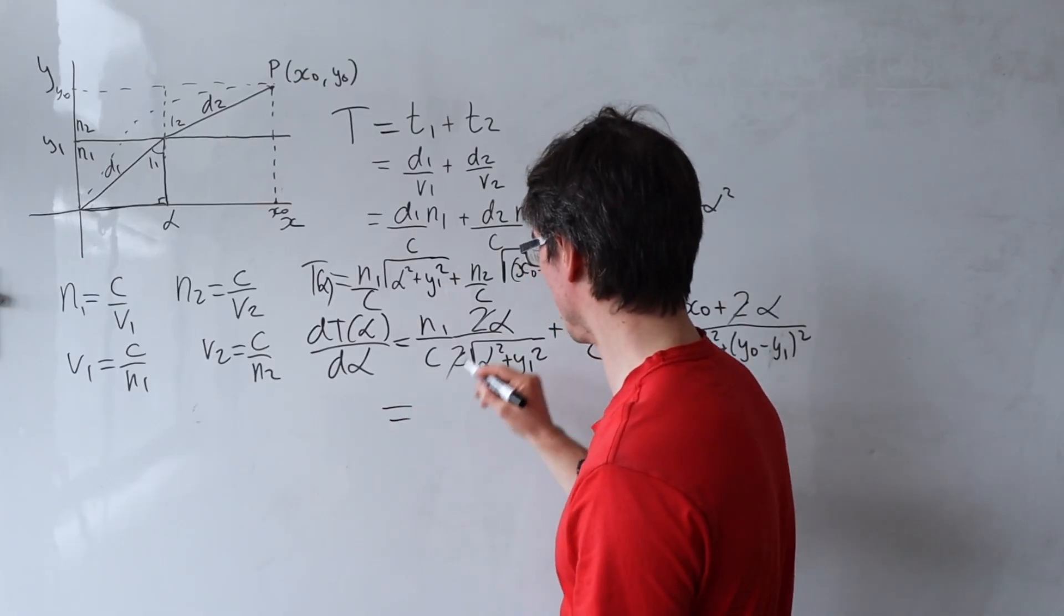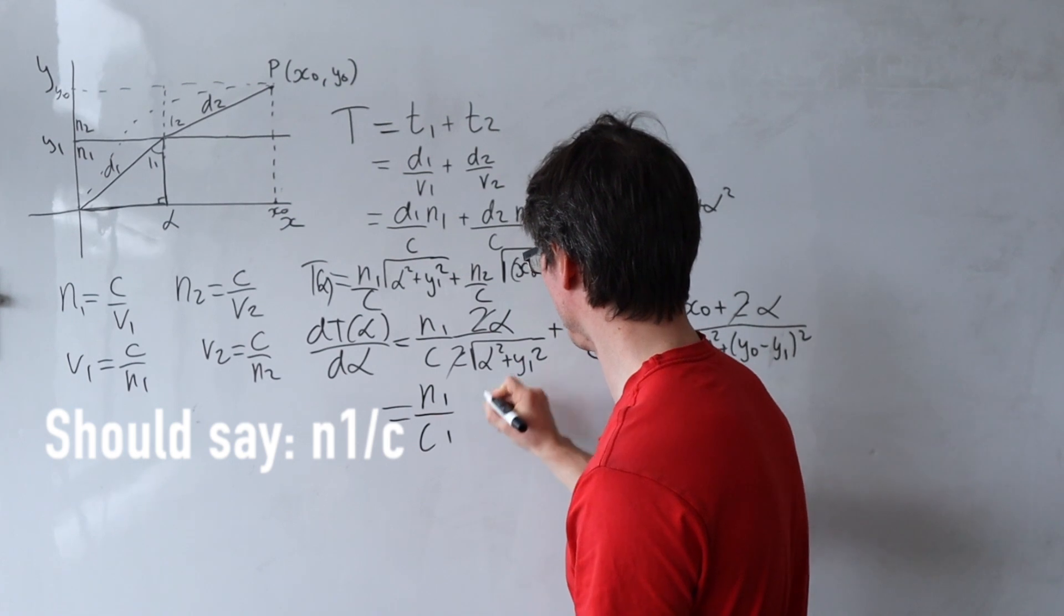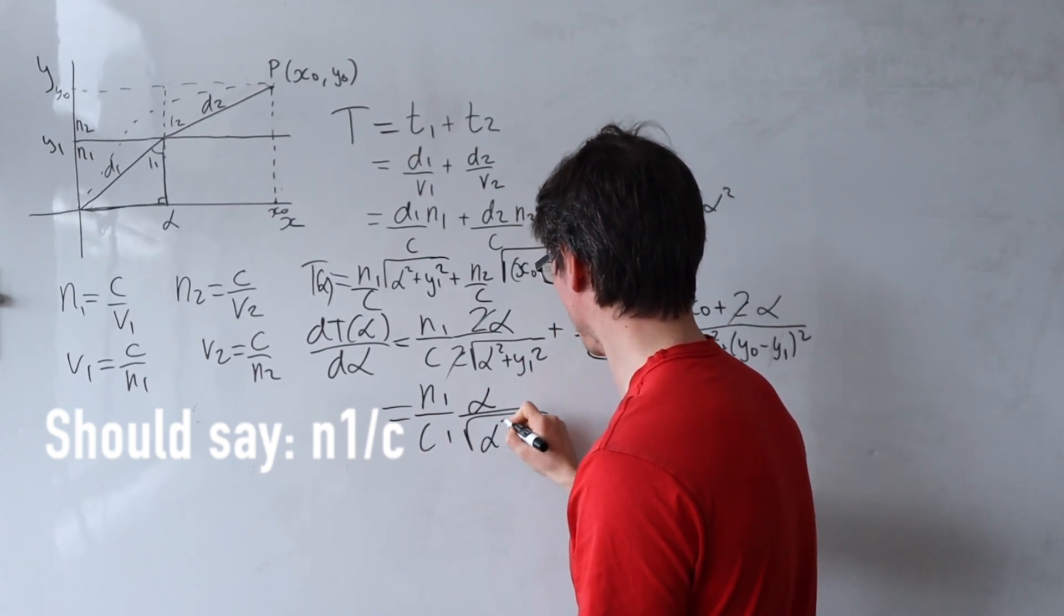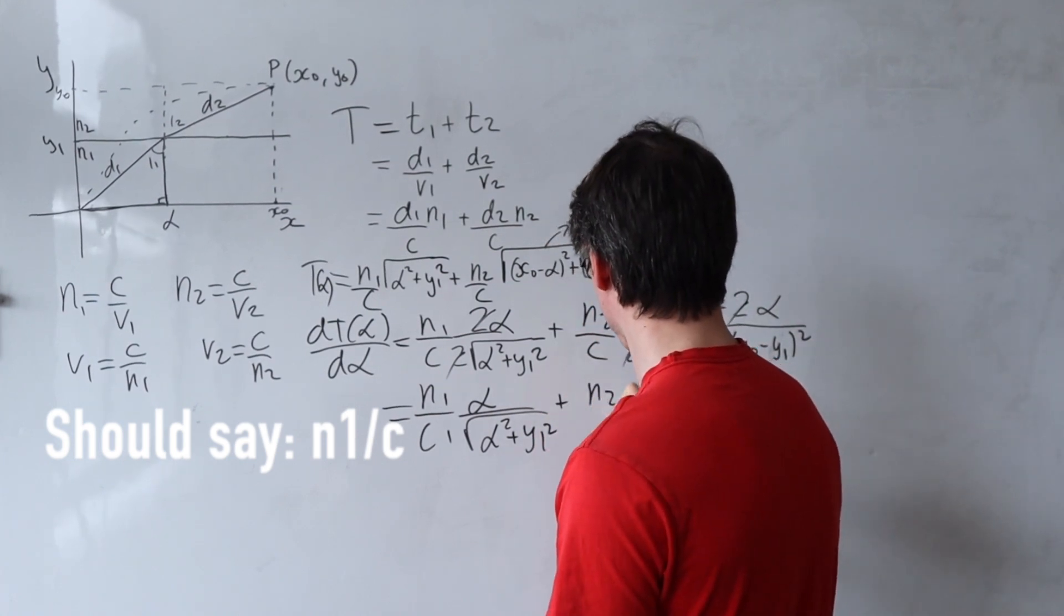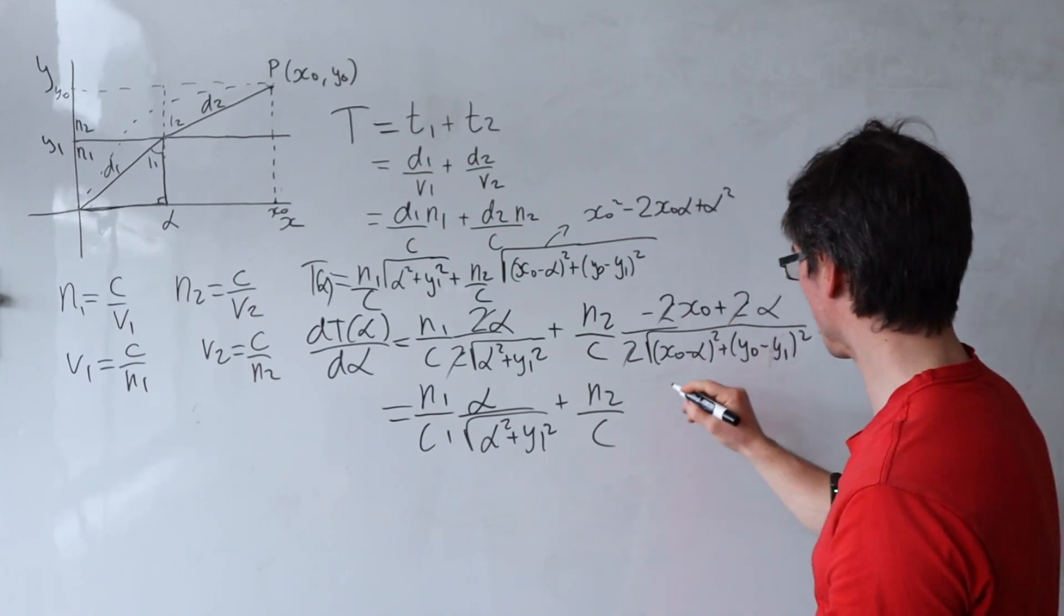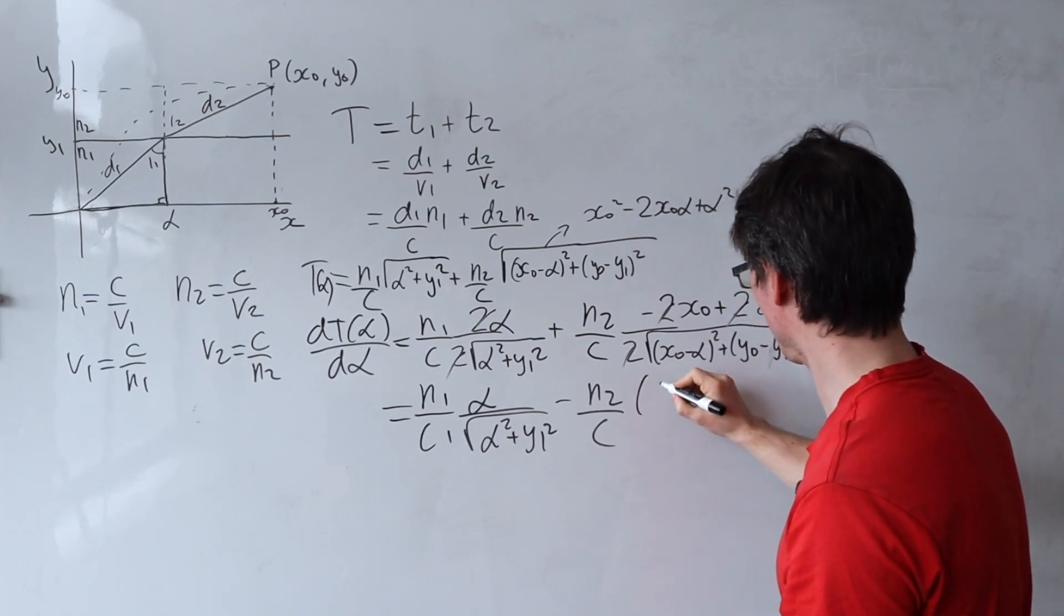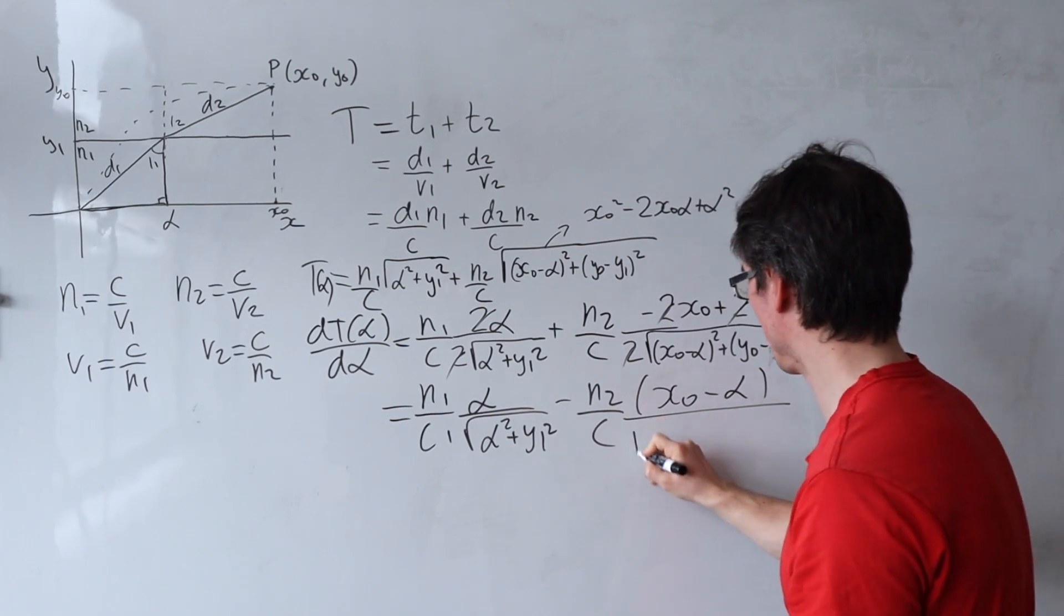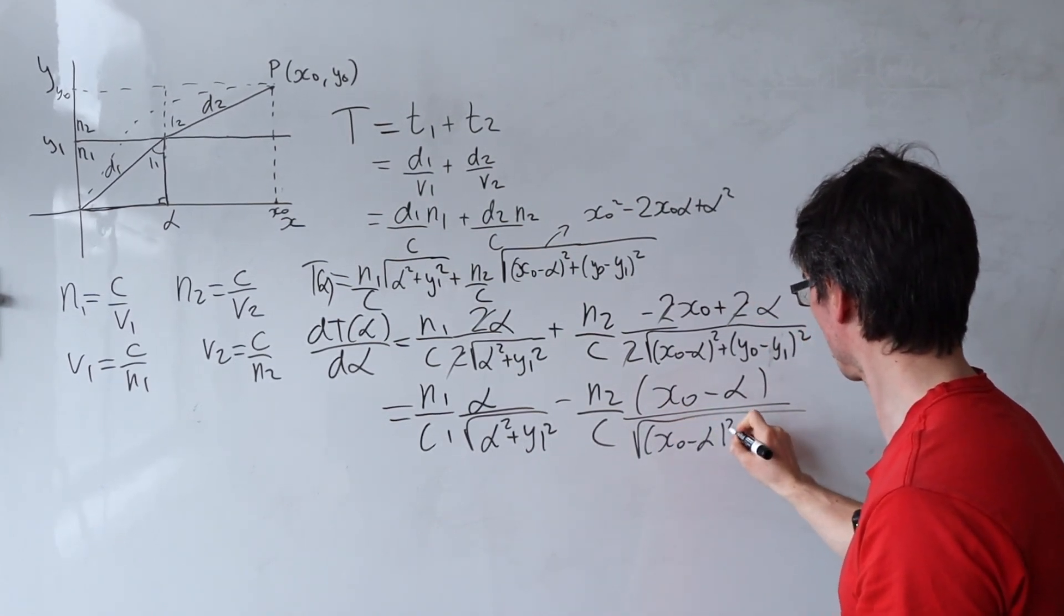So this here is just going to give me n1c1 alpha over the square root of alpha squared plus y1 squared plus n2c. And then we're going to get, let's take a factor of minus here. And inside here we're going to get x0 minus alpha divided by the square root of x0 minus alpha squared plus y0 minus y1 squared.